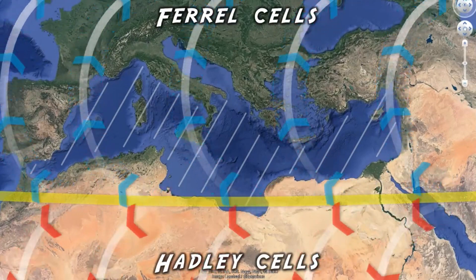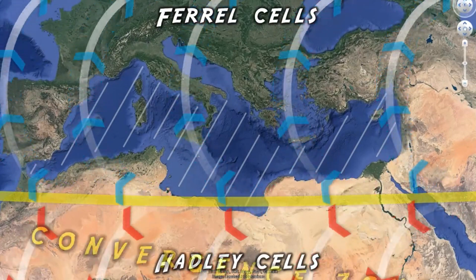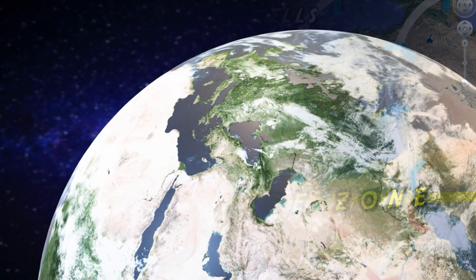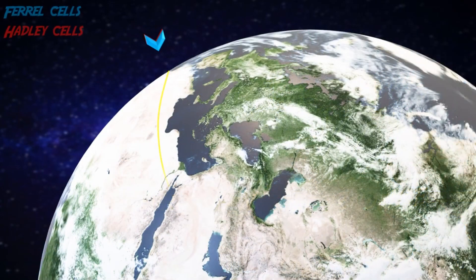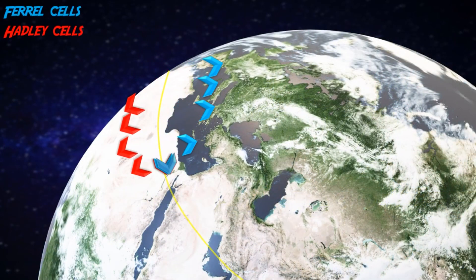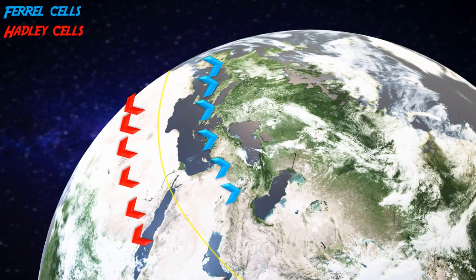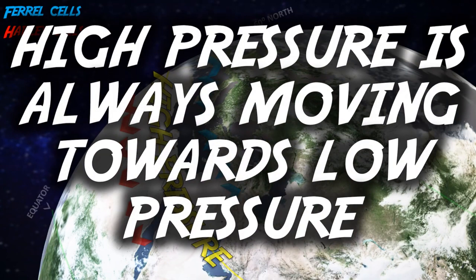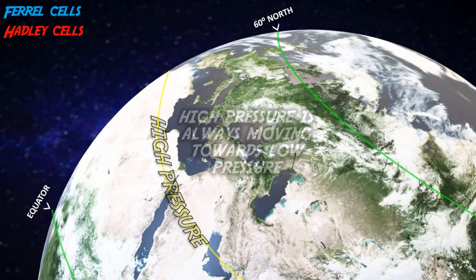Areas where prevailing winds meet are called convergence zones. At this particular convergence zone, you've got Ferrel and Hadley cells pushing down along North Africa, creating high pressure systems and causing little rainfall. But remember, high pressure is always moving towards low pressure.